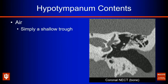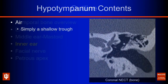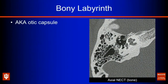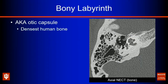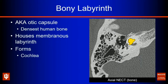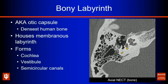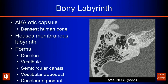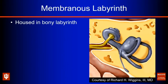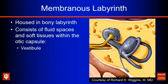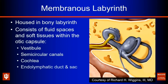The hypotympanum doesn't contain much — it should only contain air in its normal state. Moving on to the inner ear, we'll start with the bony labyrinth, also known as the otic capsule, seen here in yellow. This is the densest bone in the human body and houses our membranous labyrinth, providing support and structure to our cochlea, vestibule, semicircular canals, vestibular aqueduct, and cochlear aqueduct. The membranous labyrinth consists of the fluid and soft tissue spaces of the inner ear, including the vestibule, semicircular canals, cochlea, endolymphatic duct and sac, and the cochlear duct.